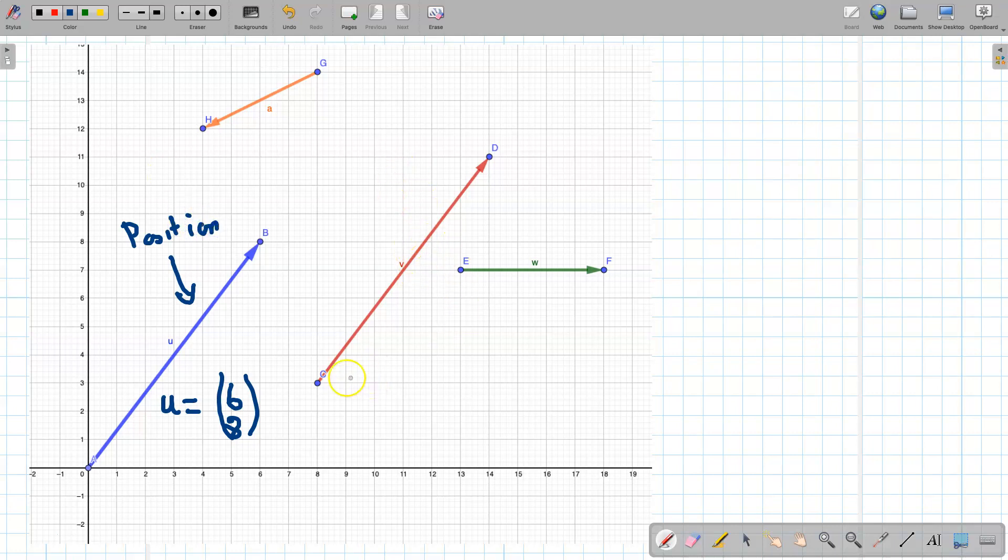If we look at v, v also goes along 6 and up 8. v and u, they're exactly the same vector. So v is 6, 8, or v rather is 6, 8.